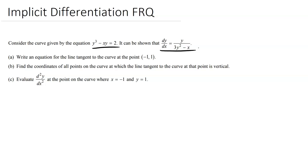This can be tricky because it can be hard to understand what the problem exactly is trying to get at and how you're going to go about solving it. So, Part A: write an equation for the line tangent to the curve at the point negative one comma one.